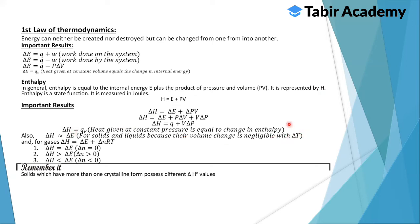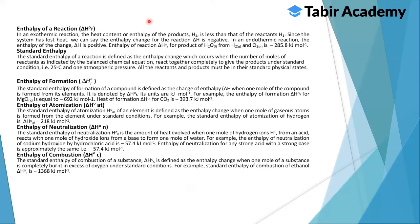Heat given at constant volume equals the change in internal energy, and heat given at constant pressure equals the change in enthalpy. Delta H is almost equal to delta E for solids and liquids because their volume changes are negligible with temperature. For gases, delta H = delta E + delta·n·R·T. Solids with more than one crystal form possess different delta H values.